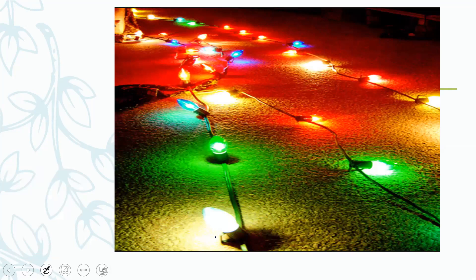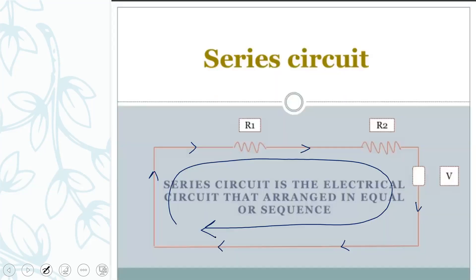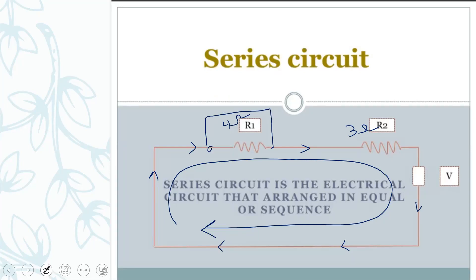If there is an open circuit, if there is a gap, if you cut the wire, the current will not flow through the circuit. The resistances here are different — this one could be four ohms, that one could be three ohms. Since the resistances are different, the voltage will also be different.